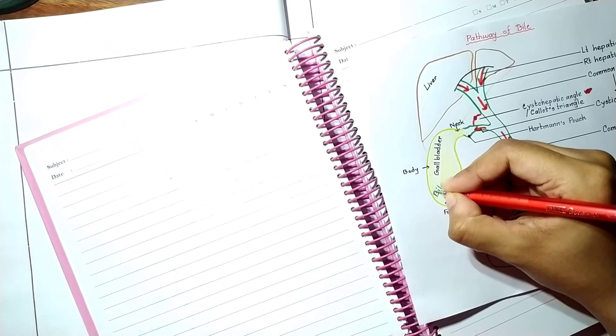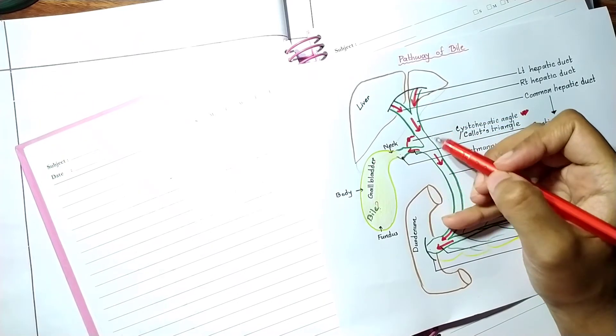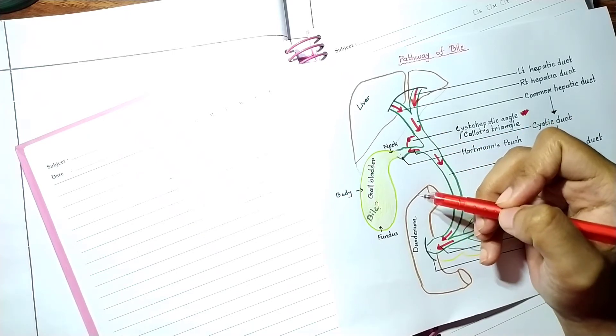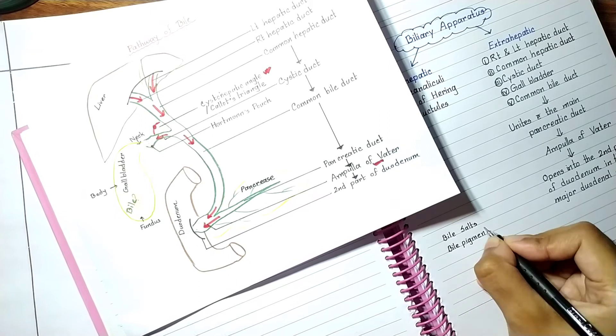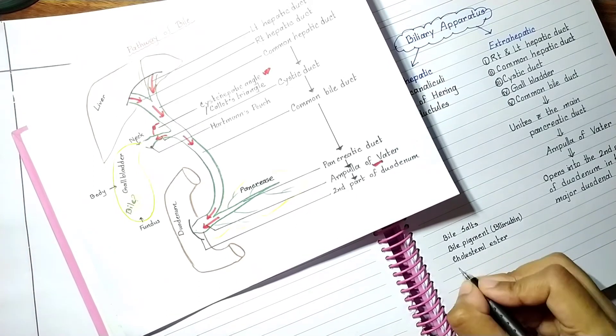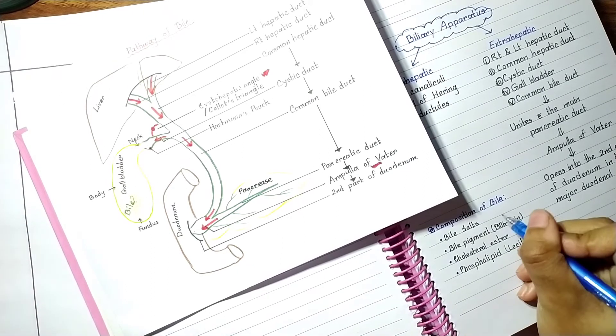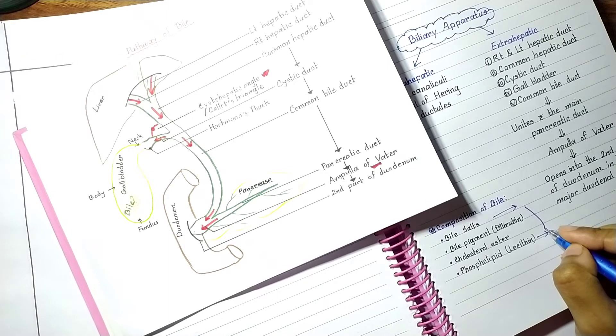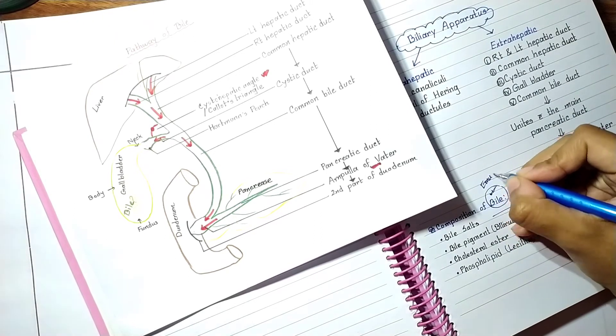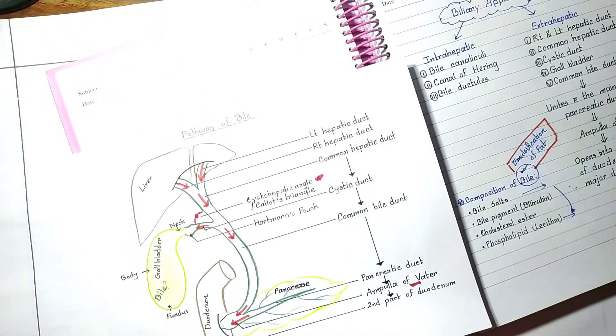Now, what is bile? Bile is the secretory product of hepatocytes that goes to the gallbladder where it is concentrated 10 times more than in the liver. What is the composition of bile? Bile salts, bile pigment like bilirubin, cholesterol ester, and phospholipid lecithin. Here cholesterol ester is hydrophobic, so bile salt and phospholipid act as solubilizers of cholesterol in solution. This prevents cholesterol precipitation and gallstone formation. The function of bile in the body is emulsification of fat.